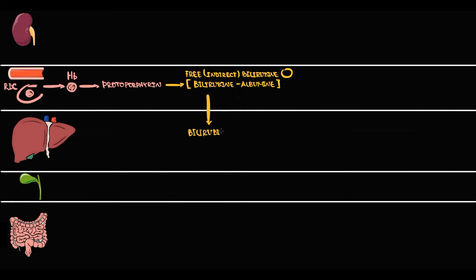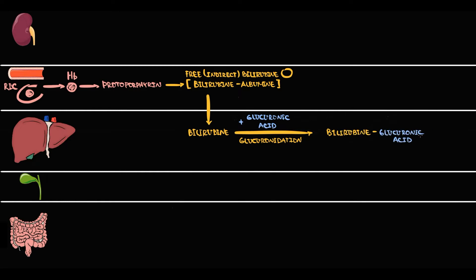In the form of an albumin-bilirubin complex, bilirubin is delivered to the liver tissue where hepatocytes take up bilirubin from the circulation. Hepatocytes, by glucuronidation, bind a glucuronic acid to free bilirubin. The complex of bilirubin with glucuronic acid we call conjugated bilirubin, or direct bilirubin.